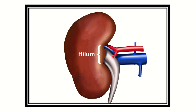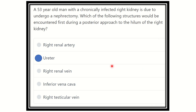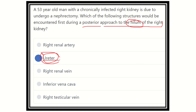In this picture, the kidney is viewed from the posterior side. From this view, the first structure we see is the ureter, then the renal artery, then the renal vein. So the ureter is the most posterior structure, and during the posterior approach to the hilum of the right kidney, the ureter will be encountered first during the nephrectomy procedure. Thank you.